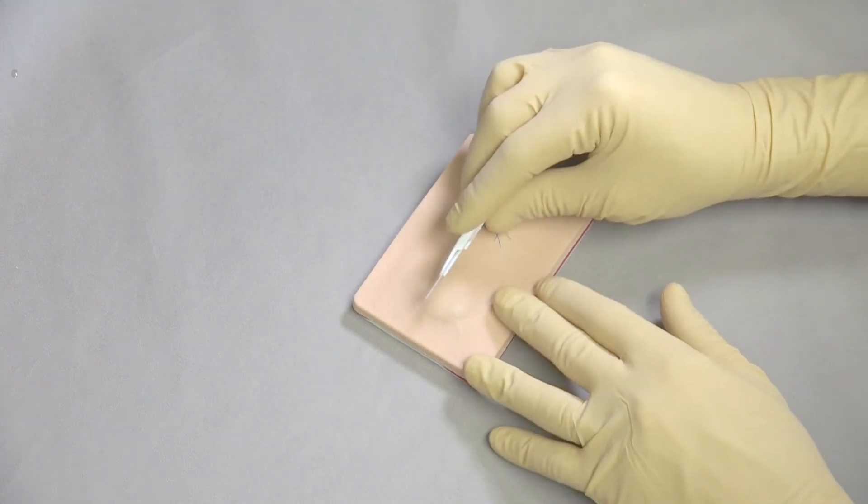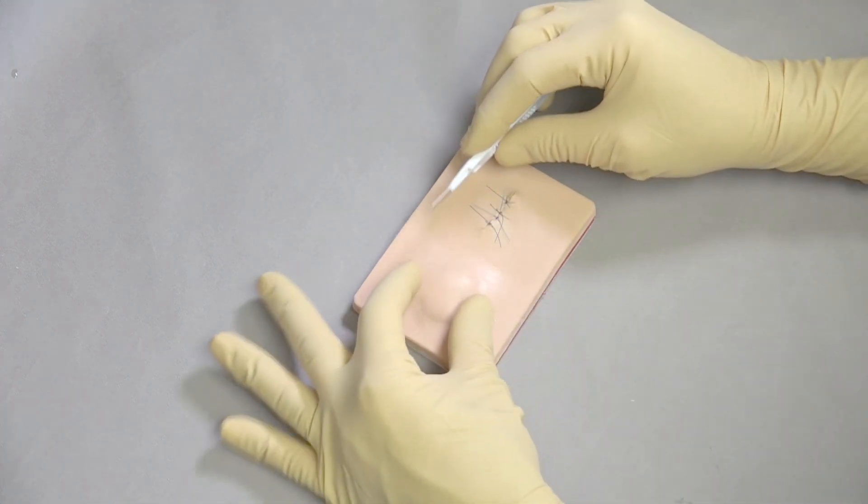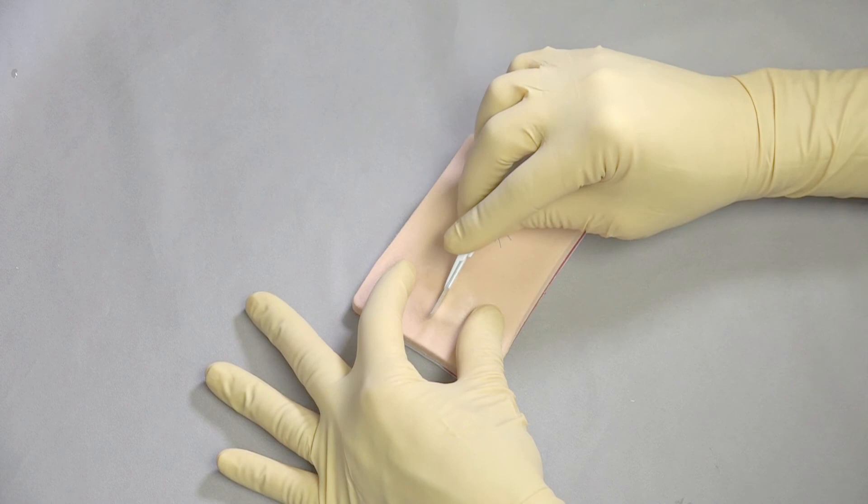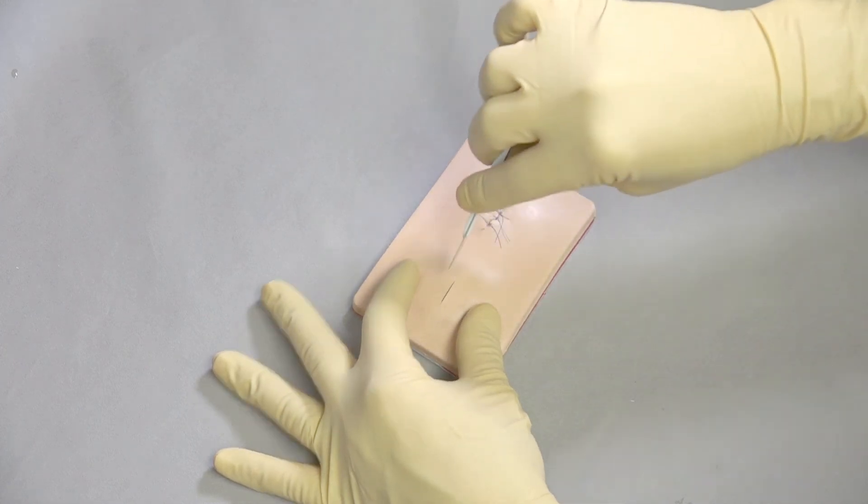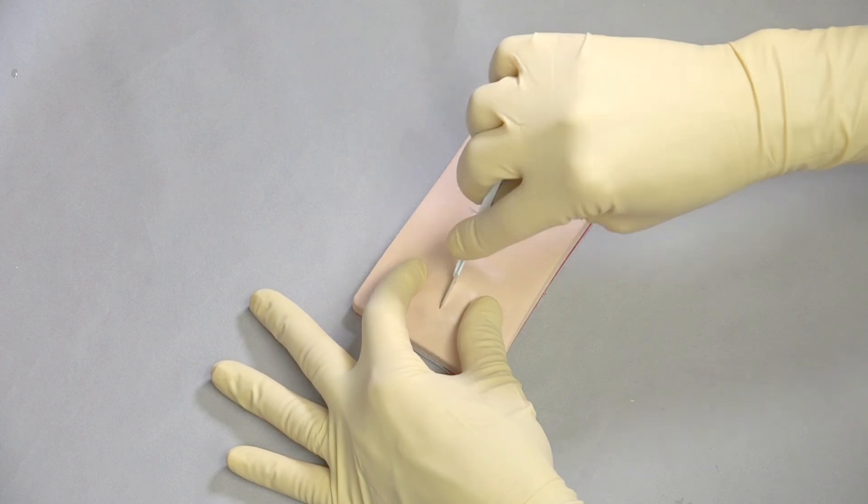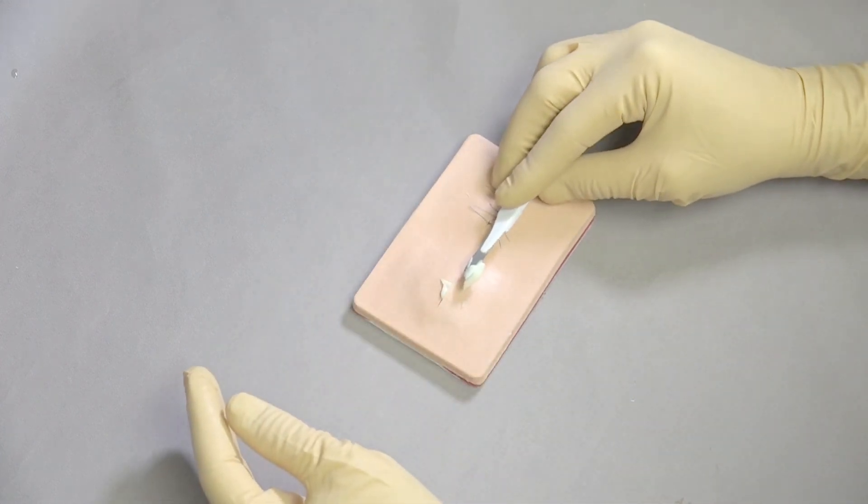So I actually prefer to use the bevel of the blade. So put some tension on the tissue. Use the bevel of the blade. Work our way in. And again we know this is an abscess and so we're not worried about getting into it. That's our whole goal. And there you can see the abscess material coming out.